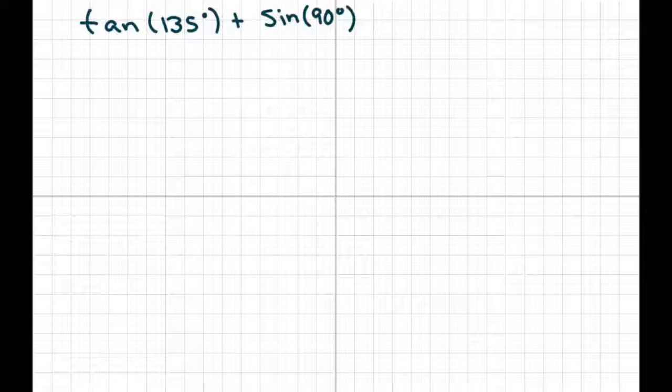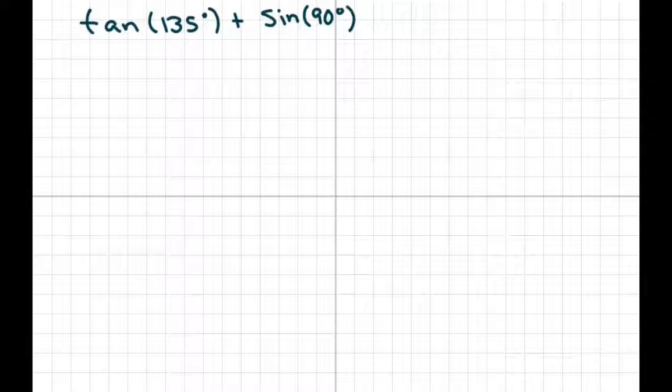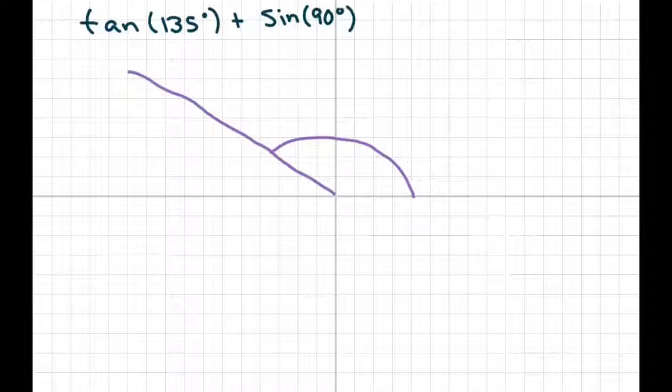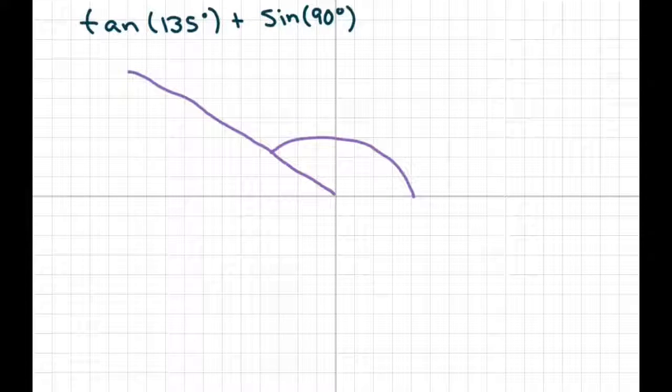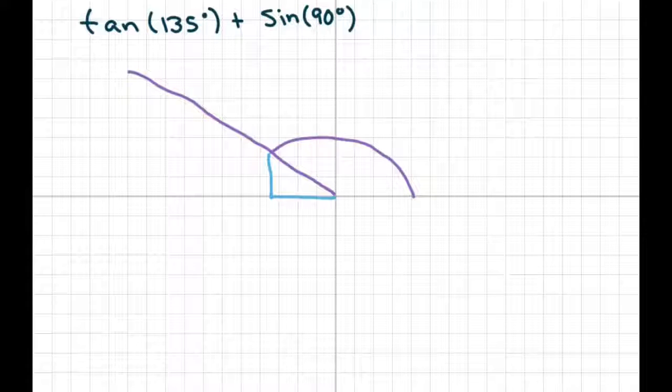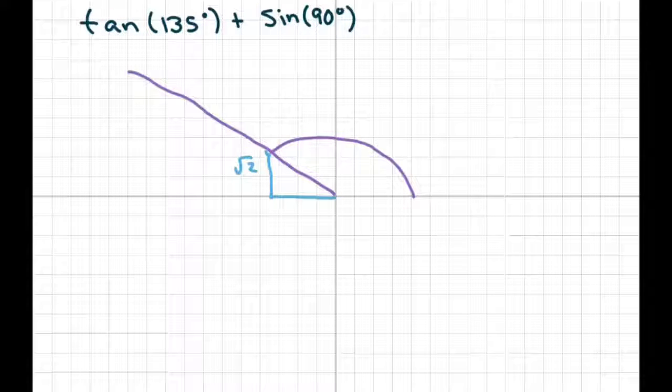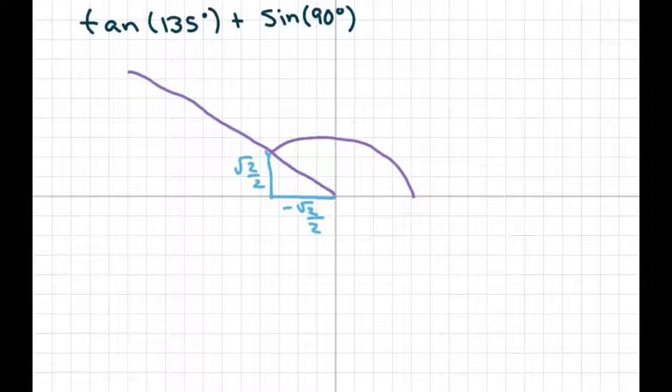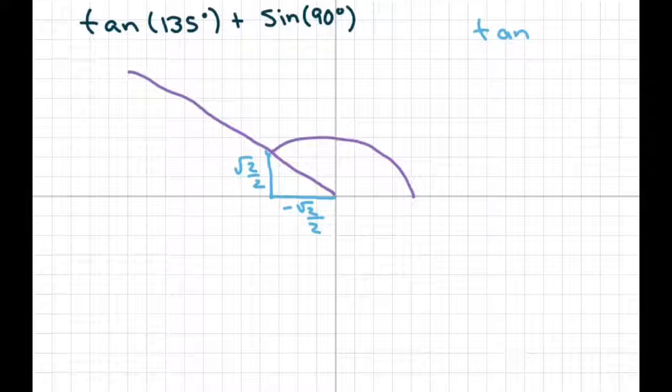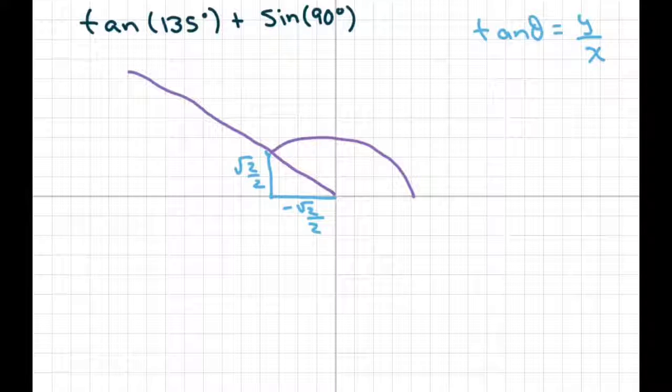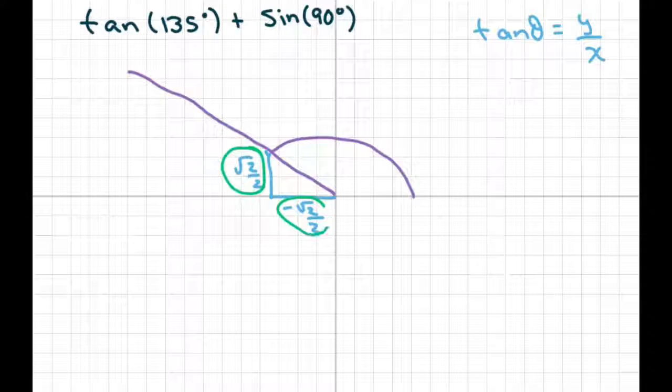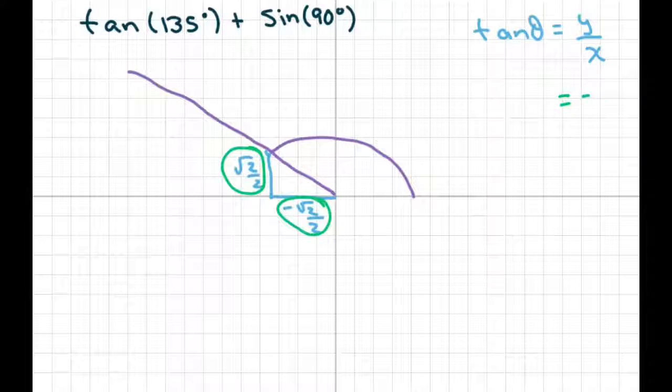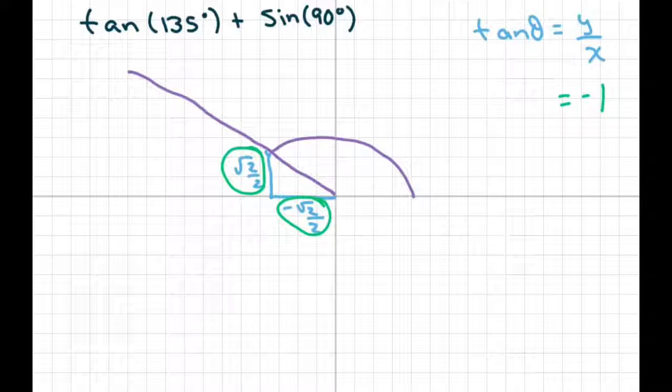The next one is tan of 135. So I know that 135 is right there. That's a 45 degree angle. Draw down to the x-axis. On the 45 ones, these two sides are going to be square root of two over two. Since this is quadrant two, our x is negative. We know tan is your y over x. So when you divide this, this is your y divided by your x, or your vertical divided by your horizontal. You divide those two, you get negative one because they're the same numbers.